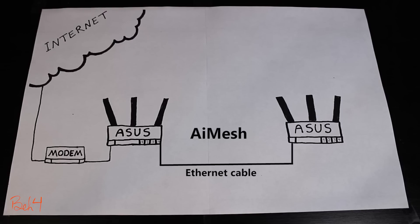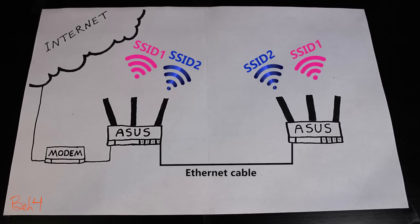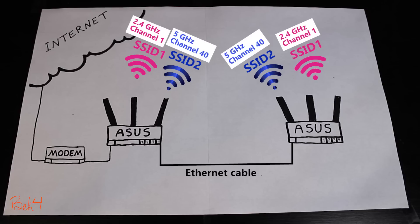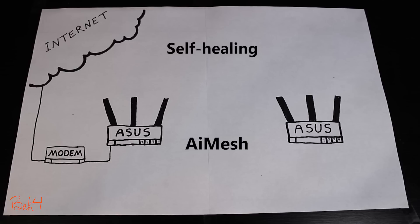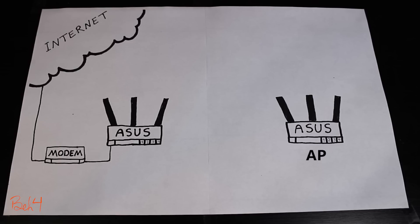In AI mesh mode, however, these two would be broadcasting on the same channel, which can cause interference. Also, if the cable gets disconnected in the AP mode scenario, there will be some downtime until somebody replaces or reconnects the cable — whereas the AI mesh system is capable of immediately fixing the problem by switching to the wireless network.